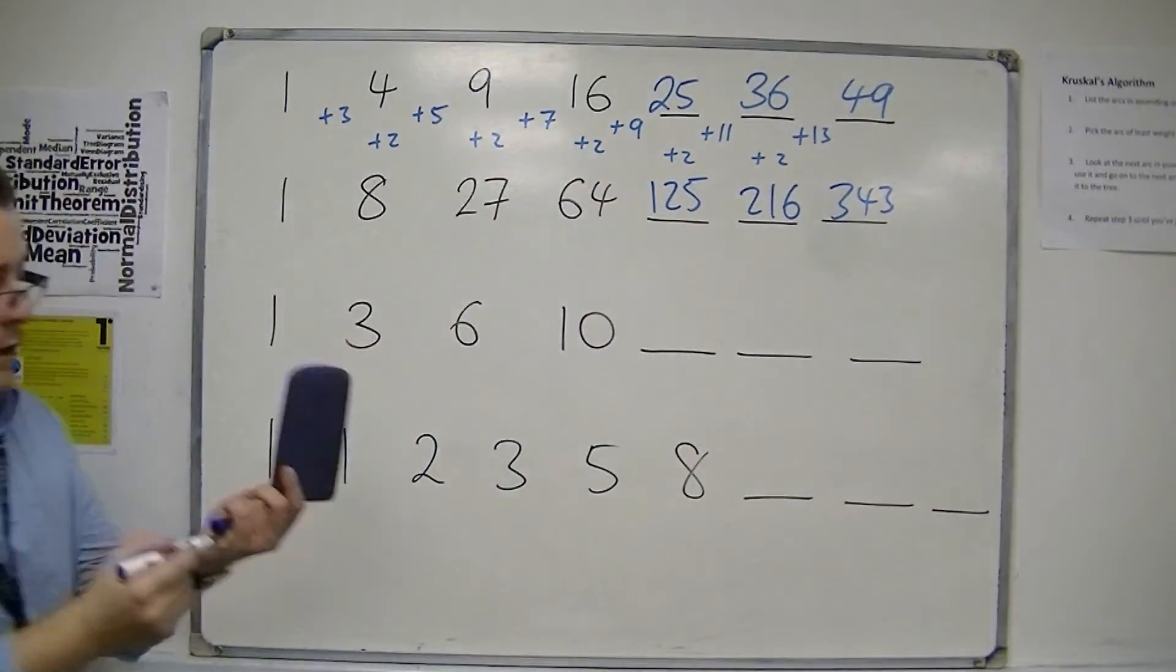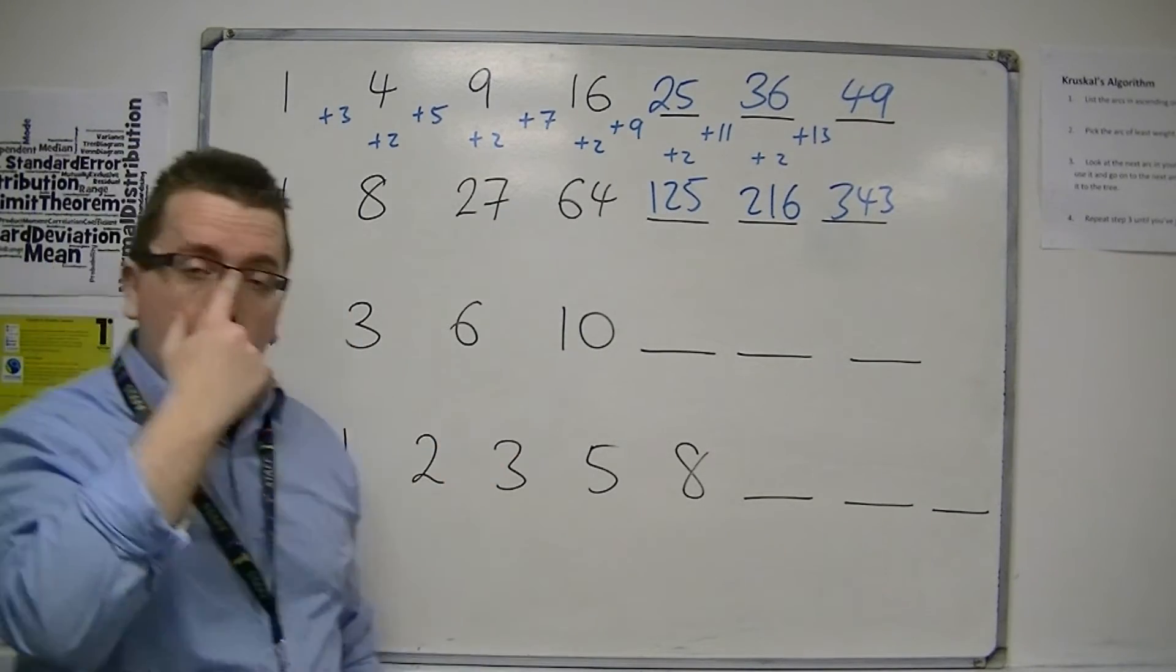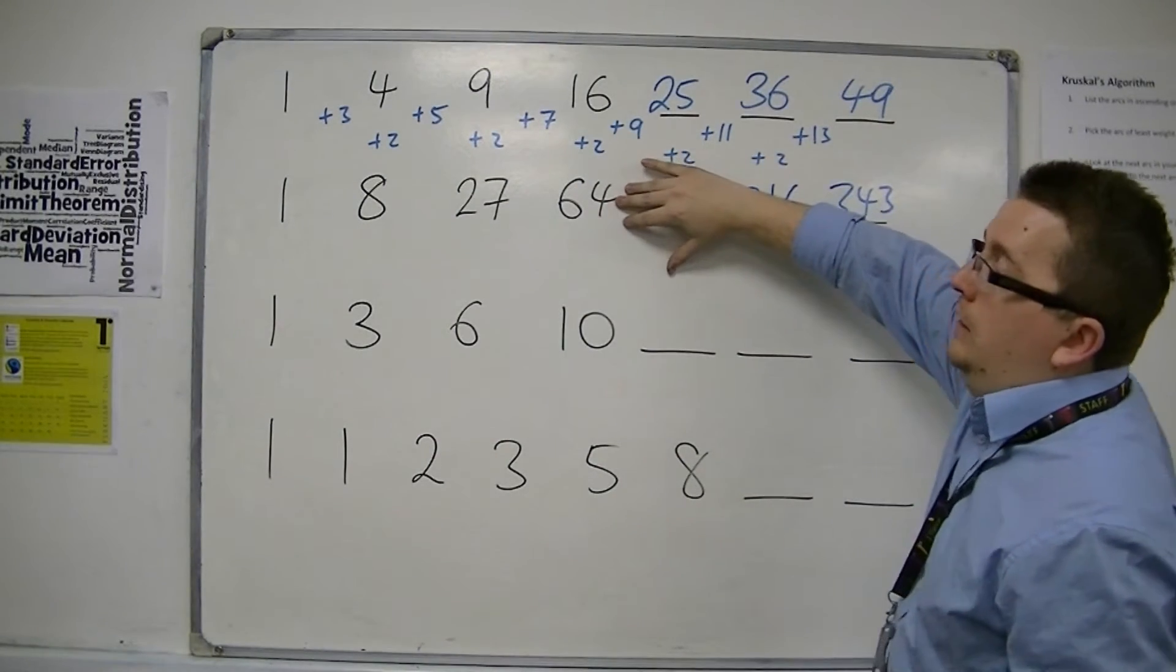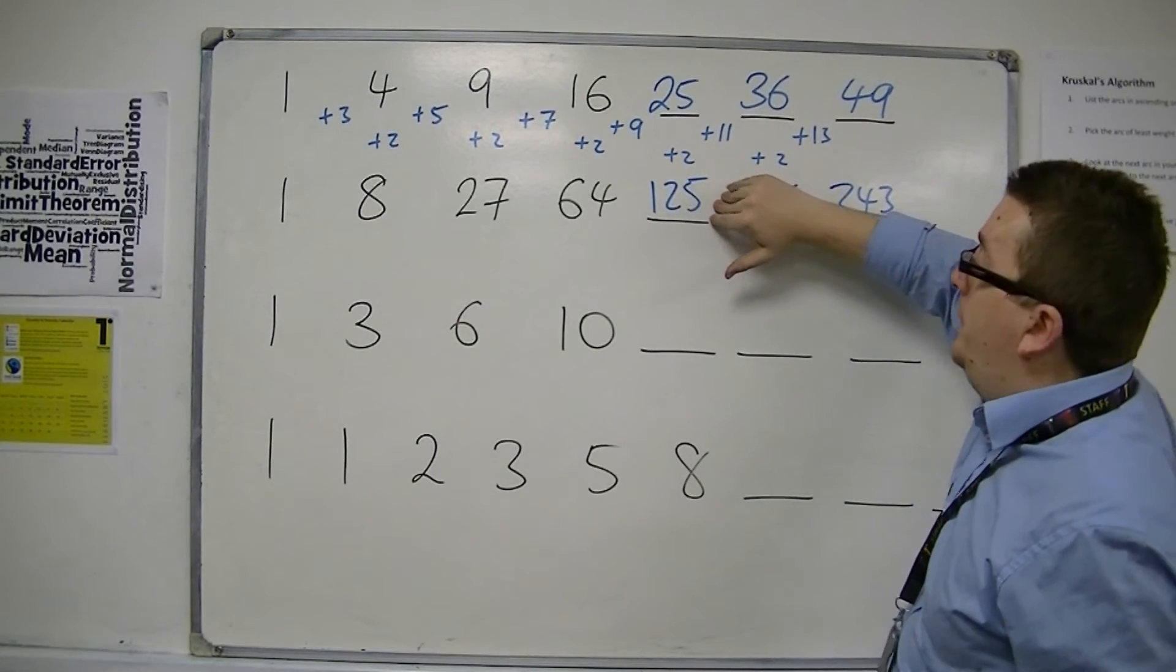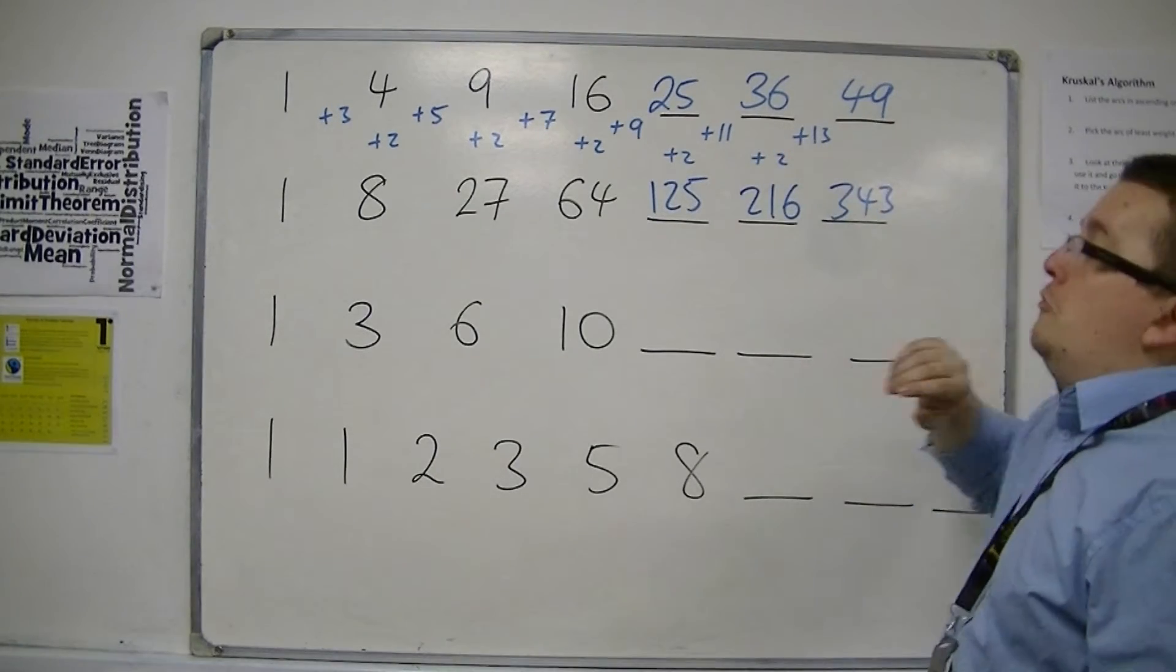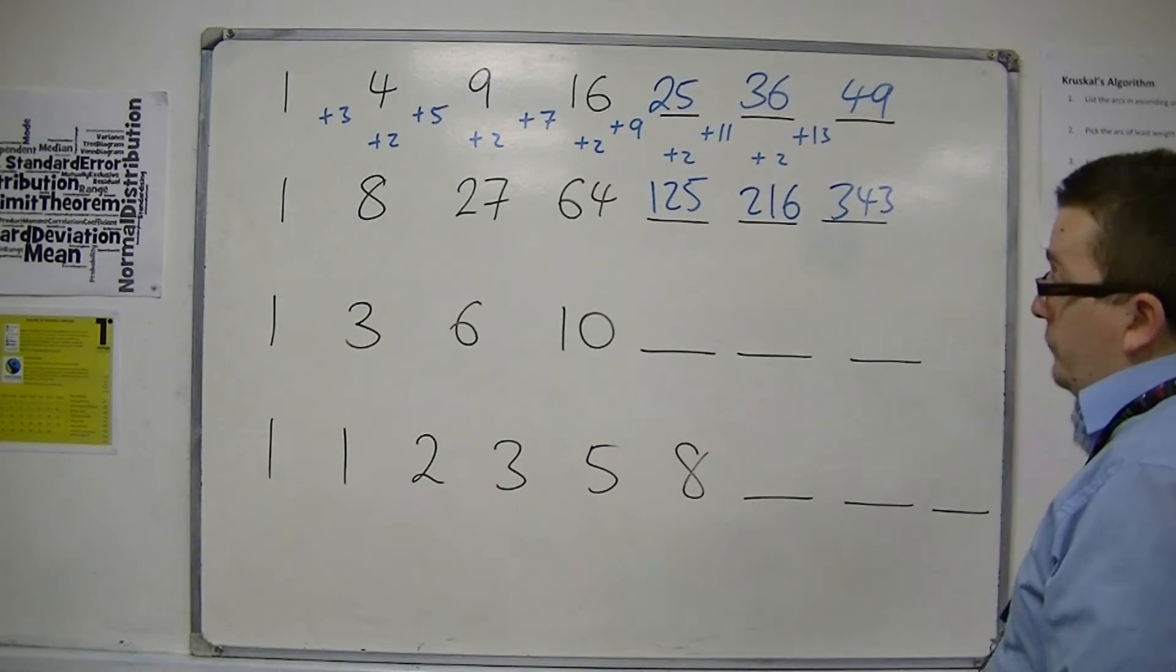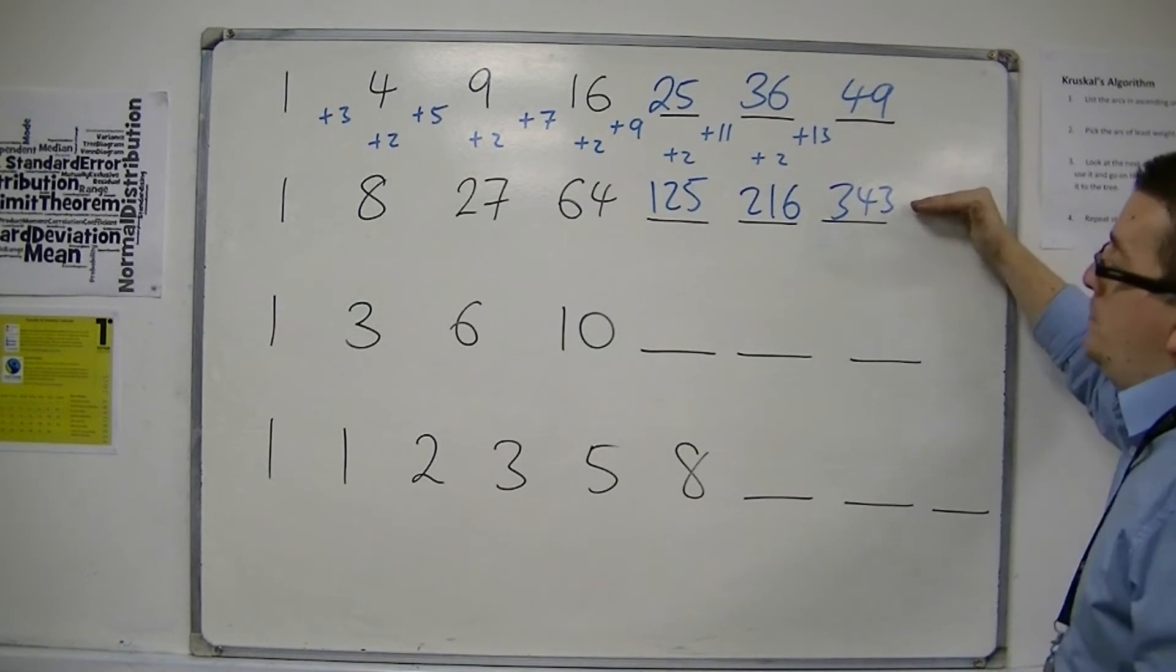And 7 cubed is 343. Now for GCSE Foundation, how many of them should you be able to spot? Really, I would suggest you know up to 4 cubed. If you can know 5 cubed, all the better. But beyond that, don't worry. I don't keep them in my head. And you won't be expected to either. But they are the cube numbers. So we've had the square numbers, the cube numbers.